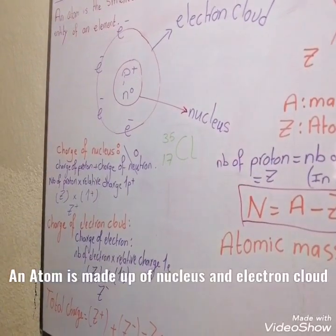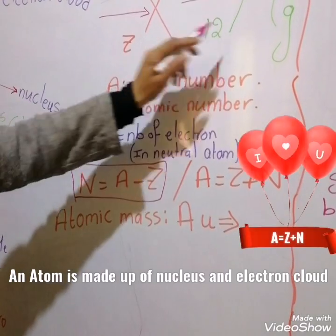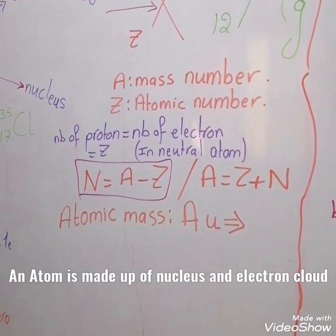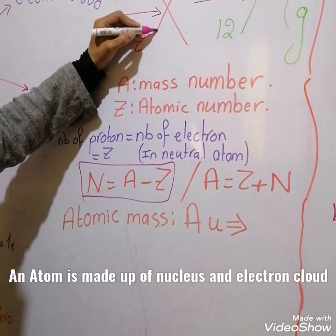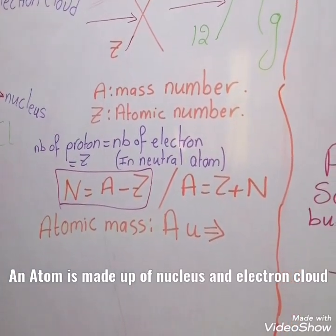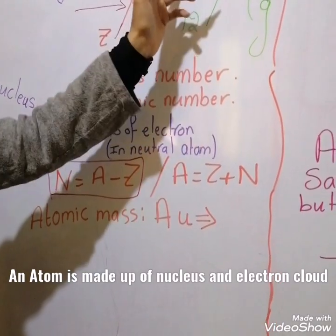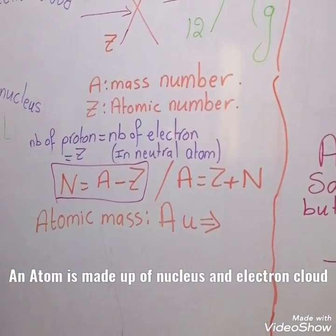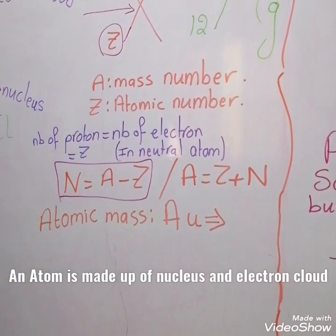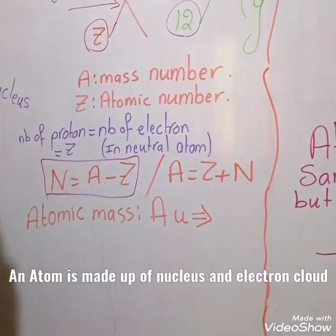The symbol of atom — for example, Mg is the symbol of atoms, donated by X. A is the mass number of atom. For example, 24 is the mass number of Mg. Z is the atomic number of atom, so 12 is the atomic number for Mg.